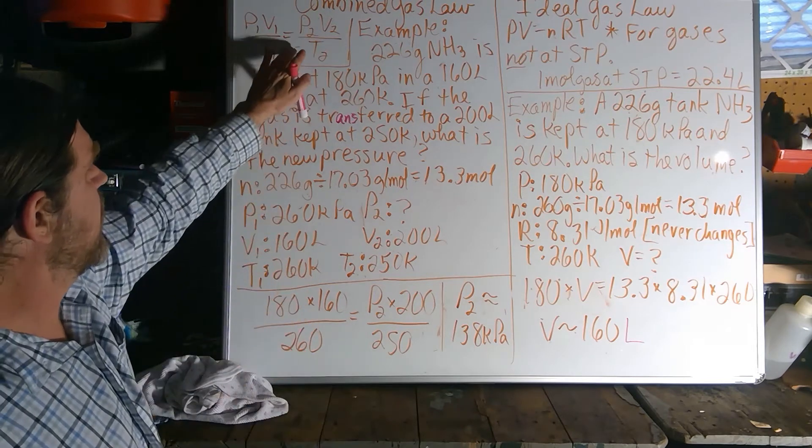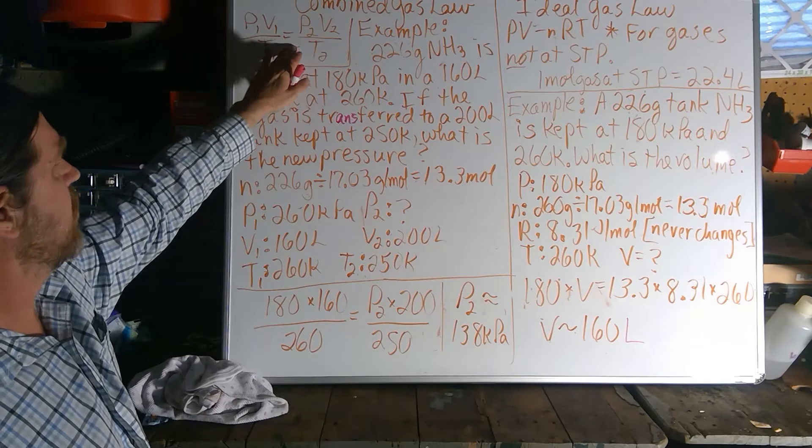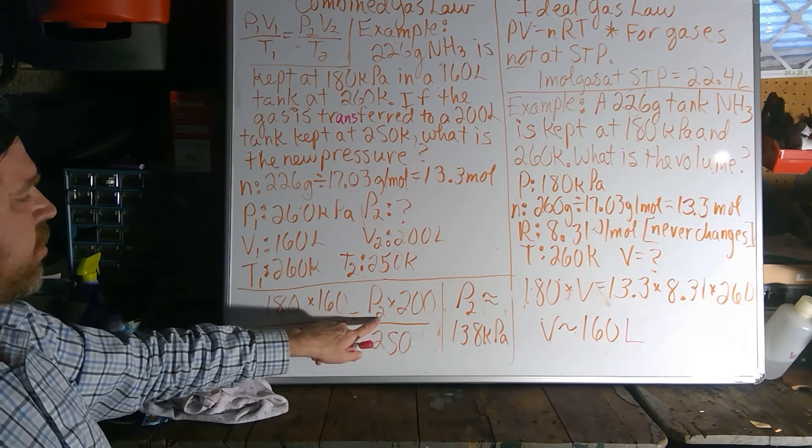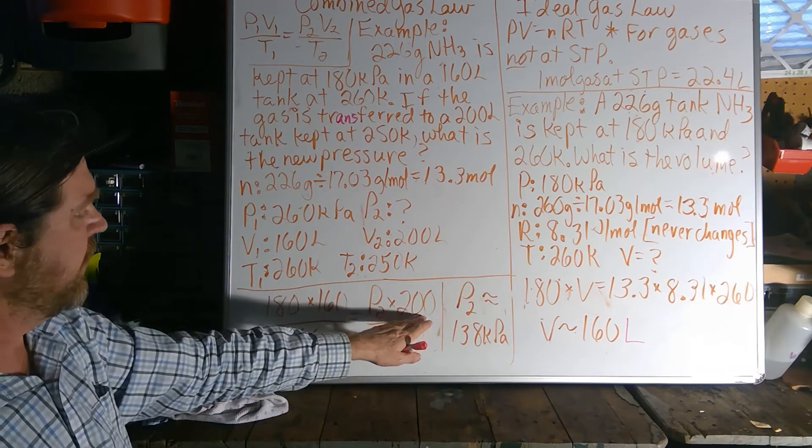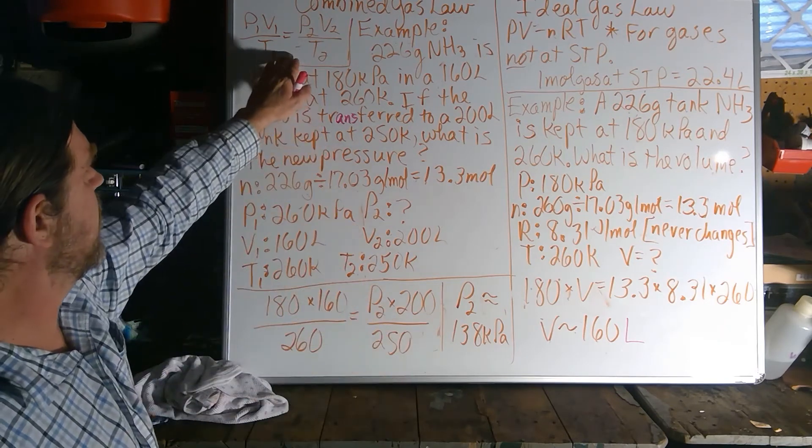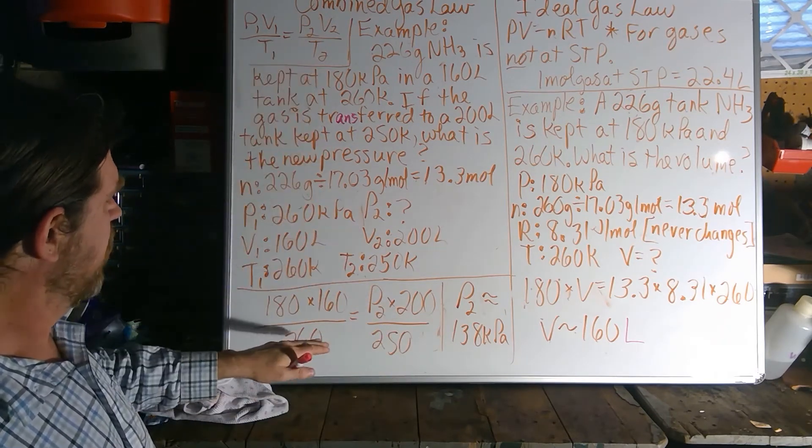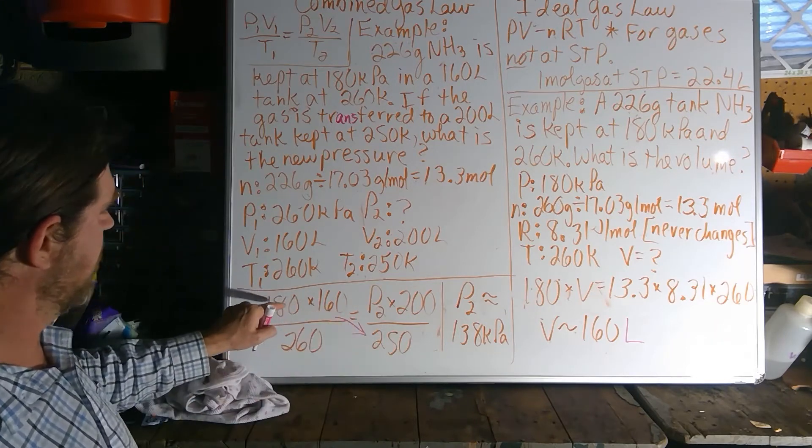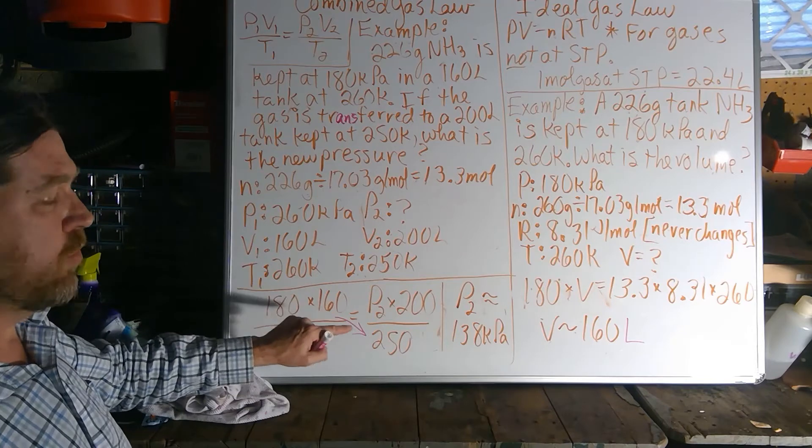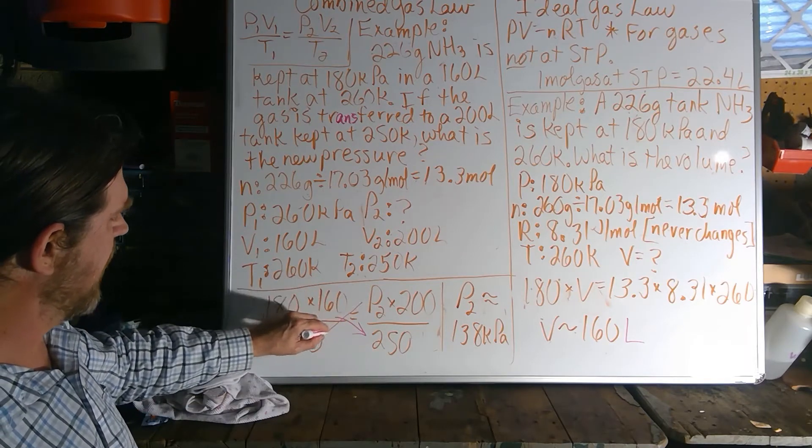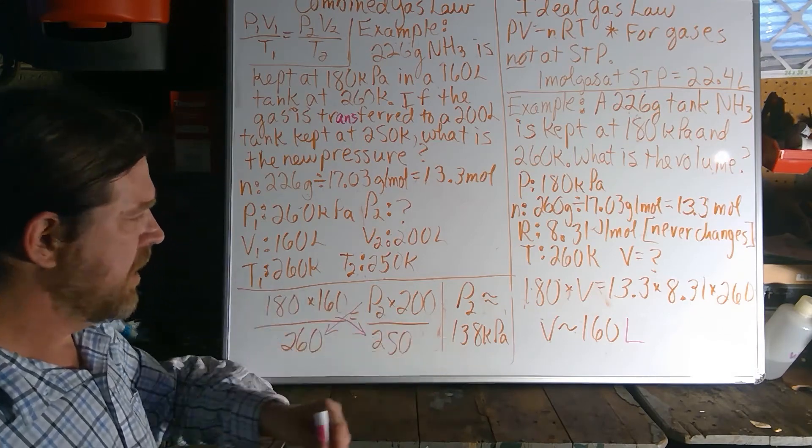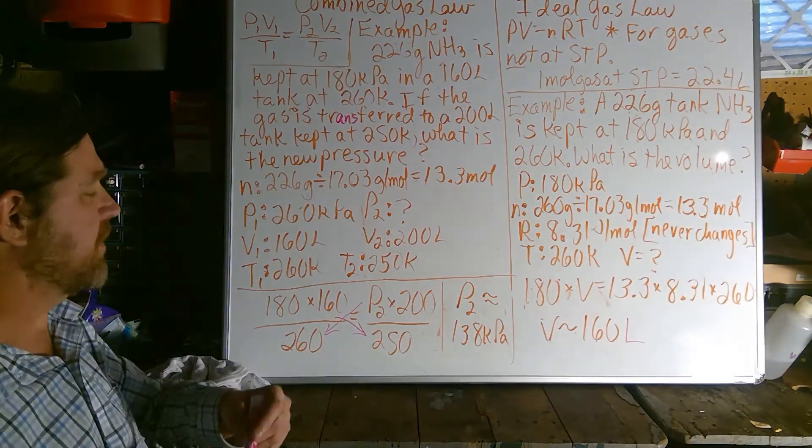So we set up the full combined gas law equation, P1, V1, T1. We're searching for P2, V2, T2. It mirrors the form up here. We simply cross-multiply and divide, so that tells us to multiply 180 times 160 times 250, and then divide by 200, divide by 260, and this should get us about 138 kilopascals.